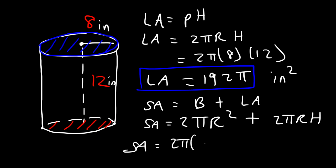8 squared is 64, and 64 times 2 is 128, so we need to add 128 plus 192.